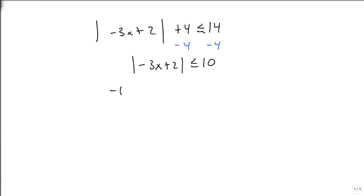Now, we take that 10, we change its sign, and we put it on the outsides. We get minus 3x plus 2 in the middle. We then subtract 2 from all of our pieces. So we get minus 12 is less than or equal to minus 3x, which is less than or equal to 8.